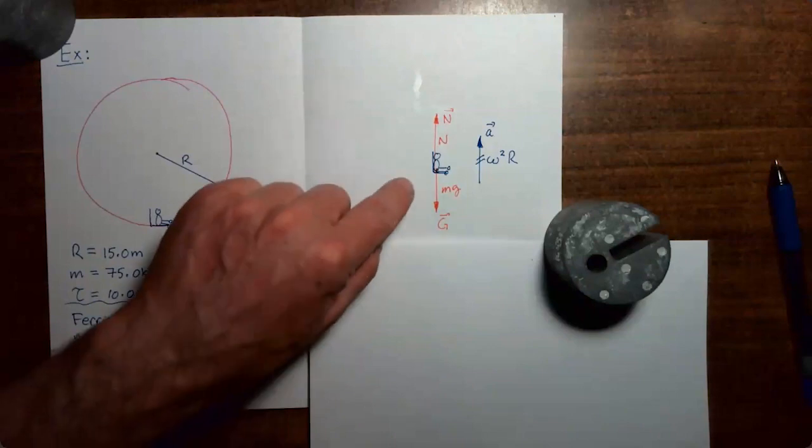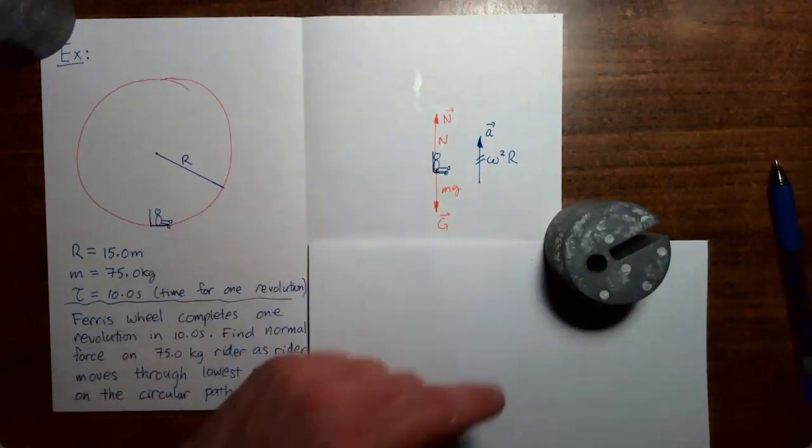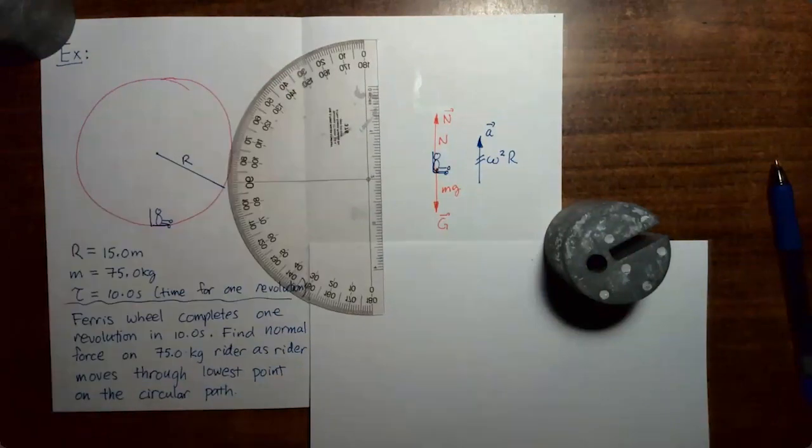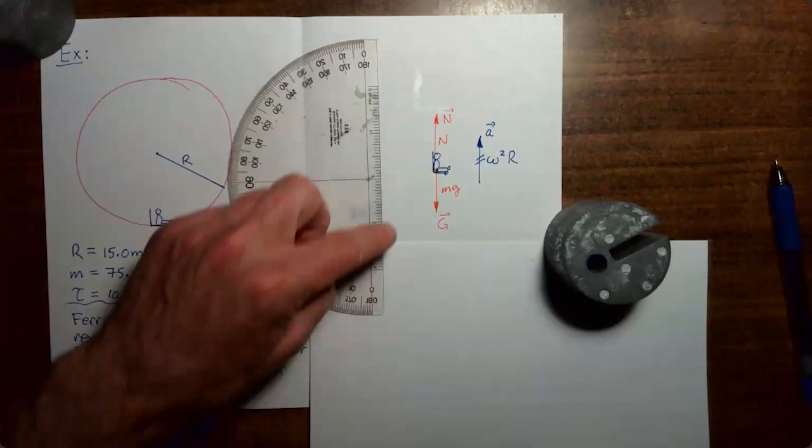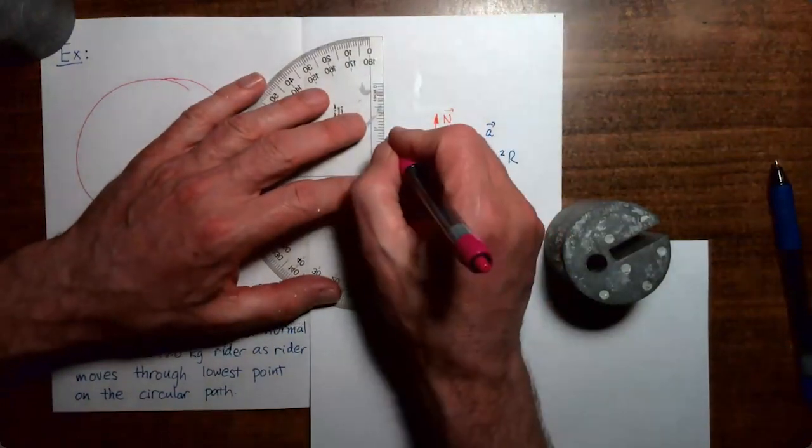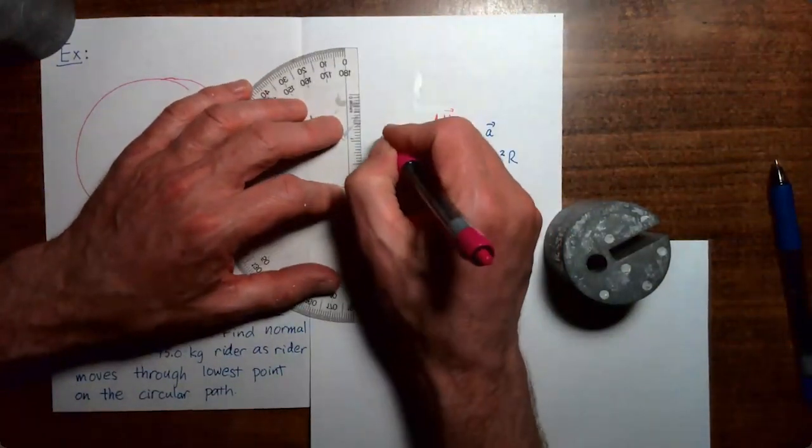Now that we've drawn our force vectors and the acceleration vector, the next step is to put in a coordinate system. Normally our coordinate system would include both an x-axis and a y-axis, but you can see that in this case all of the vectors are vertical, pointing up and down, so we don't actually need an x-axis in this problem. So I'm just going to stick in a y-axis. That's all we need here.